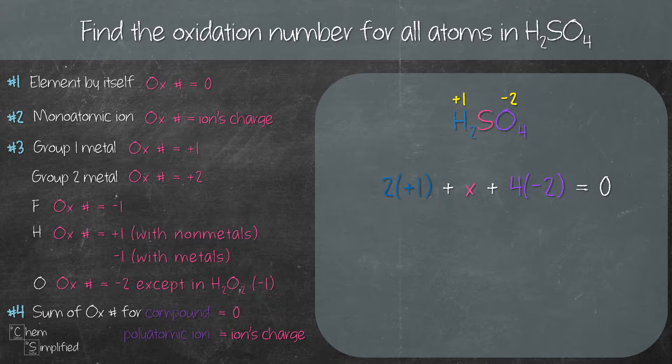The reason we multiply two with plus one is because we have two hydrogen and plus one is the oxidation number for hydrogen. Same thing with the reason we multiply four with negative two—we have four oxygen and negative two is the oxidation number for oxygen.